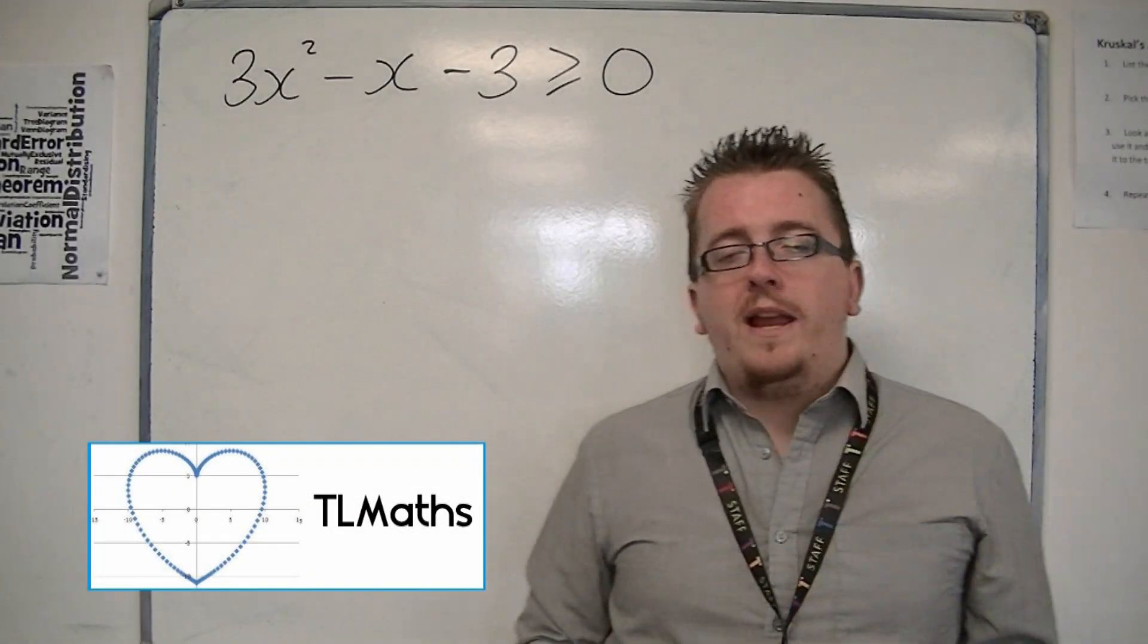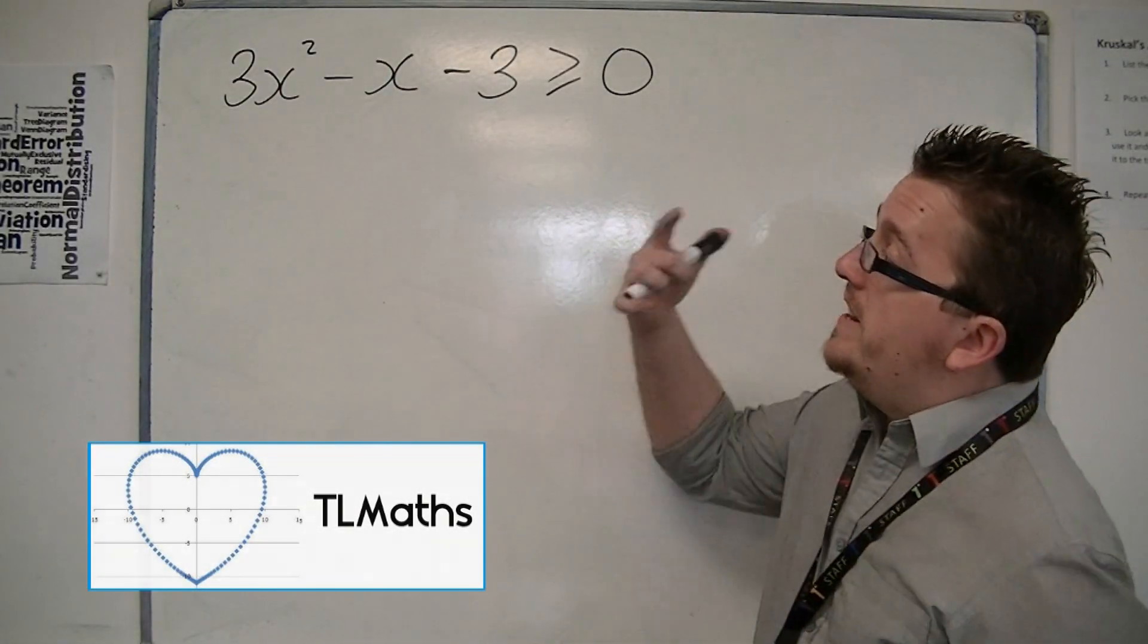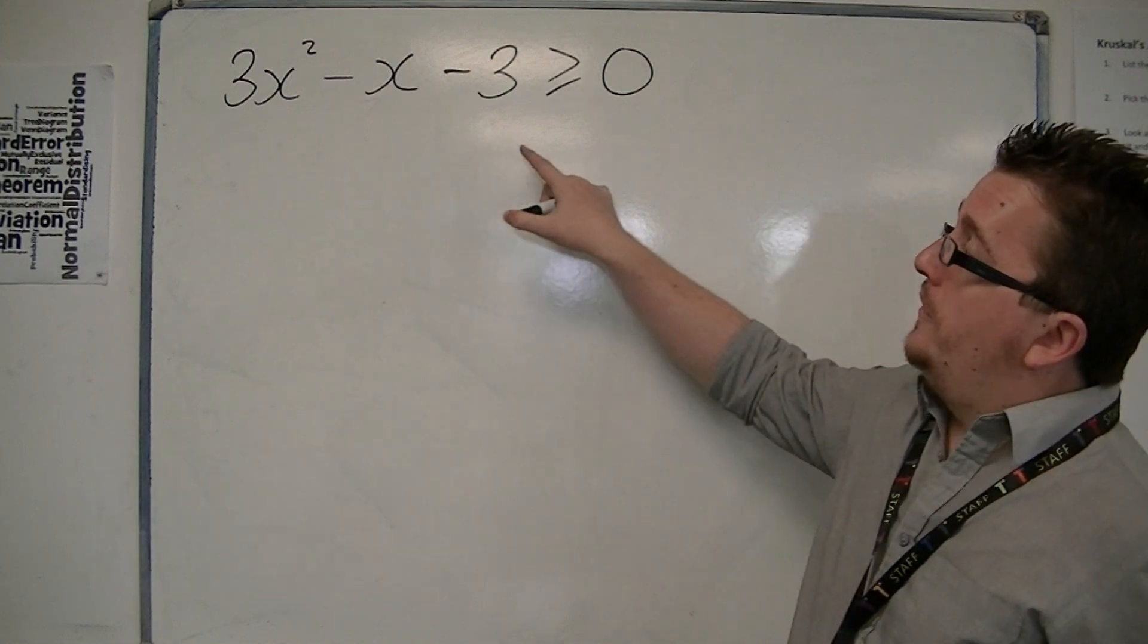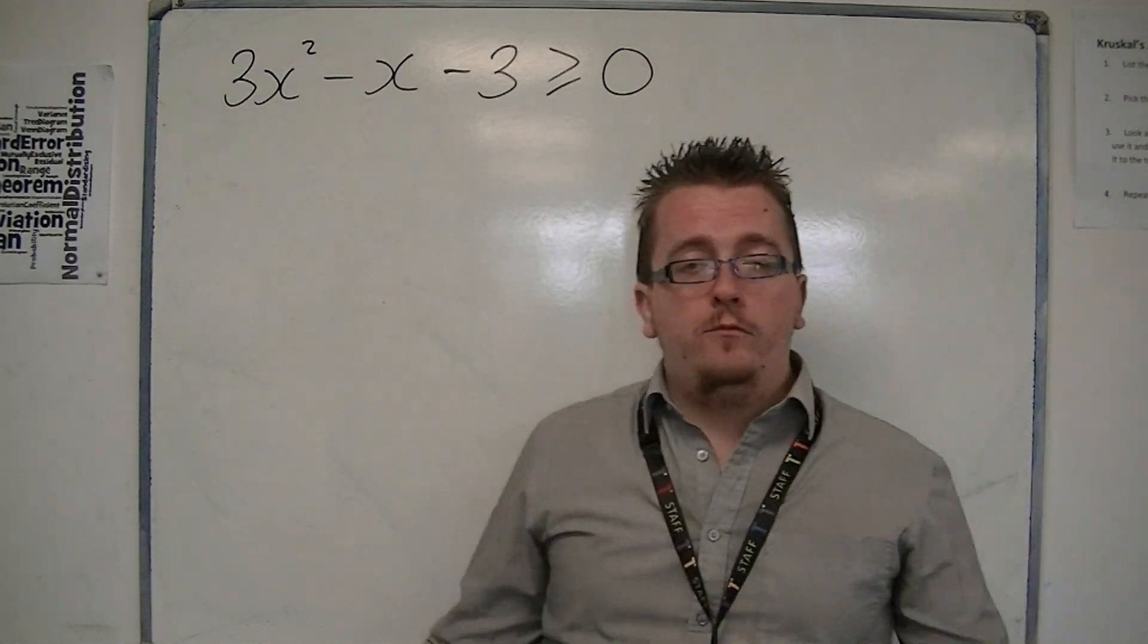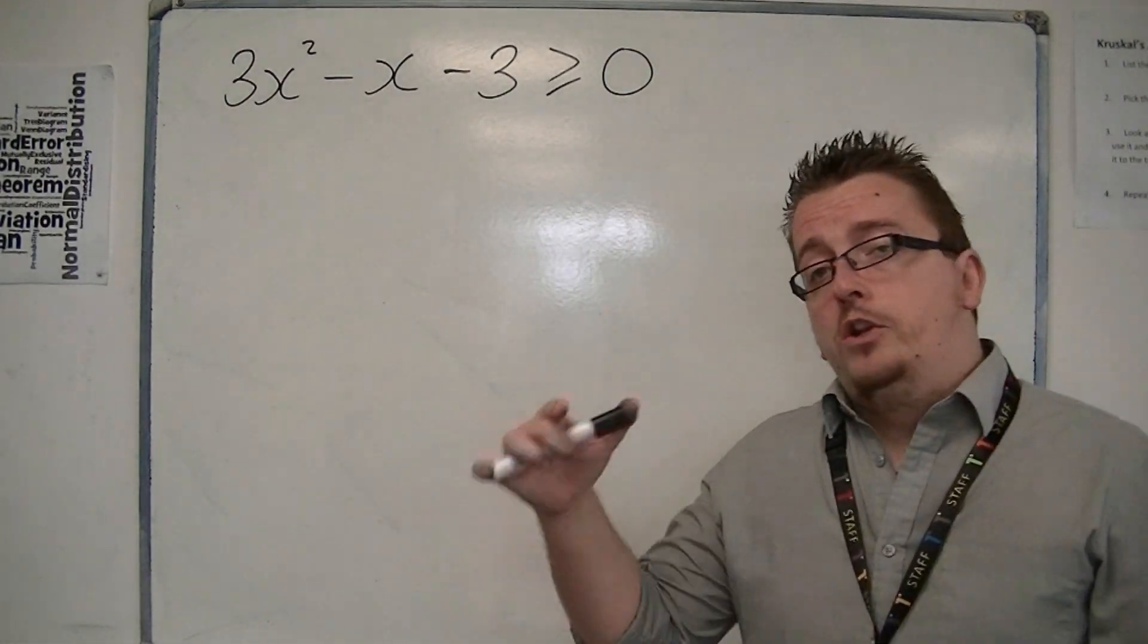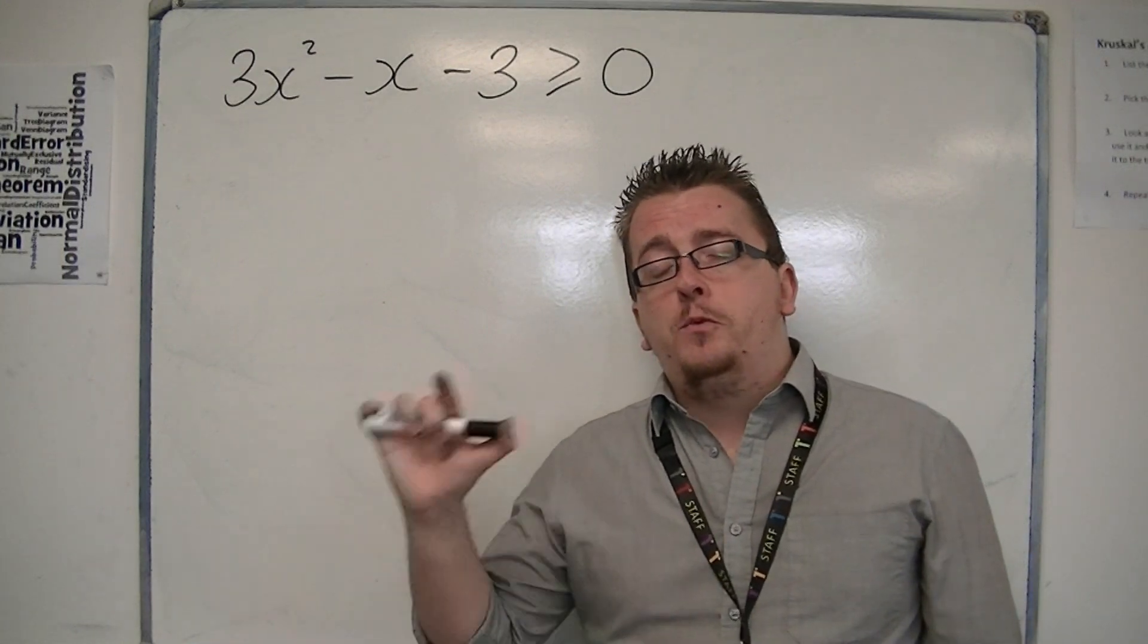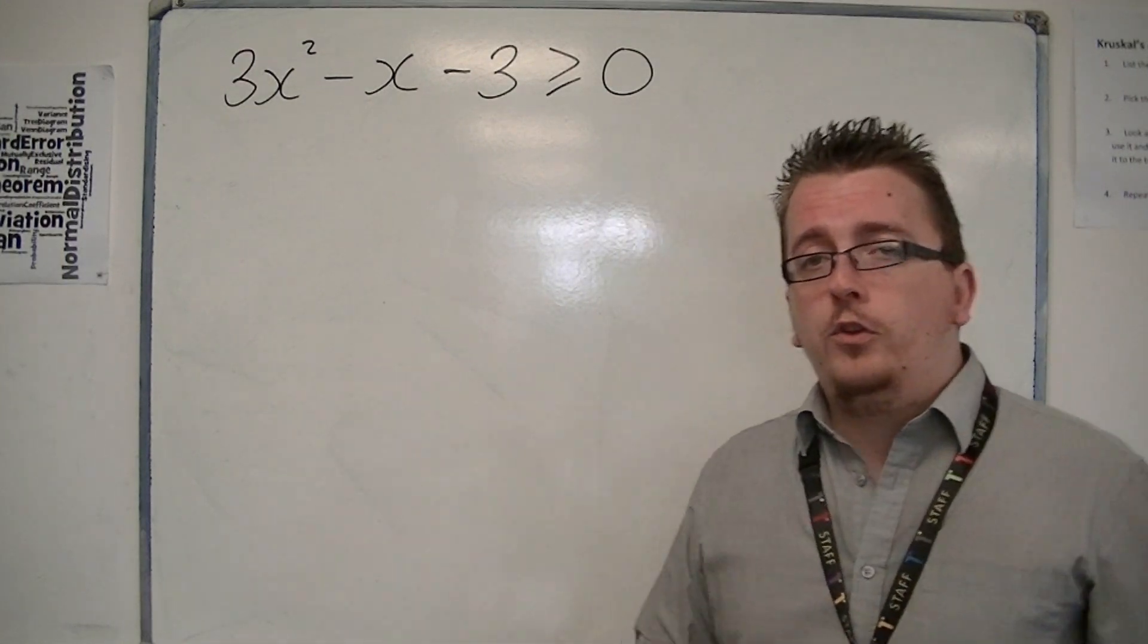So in this video, we're going to look at another quadratic inequality, namely 3x squared minus x minus 3 is greater than or equal to 0. And the reason why I've picked this one is because it won't factorise. We're going to have to use the quadratic formula.